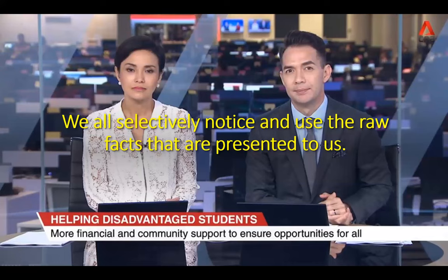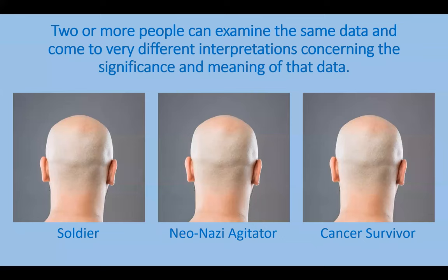For example, if you live in a city, you may pay less attention to the weather than someone who lives on a farm and relies on good weather to bring in a good harvest. We also need to be aware that two or more people can examine the same data and come to very different interpretations, including the significance and meaning of that data. We will explore more about why this is the case when we look at some of the factors that influence how we make empirical judgment.